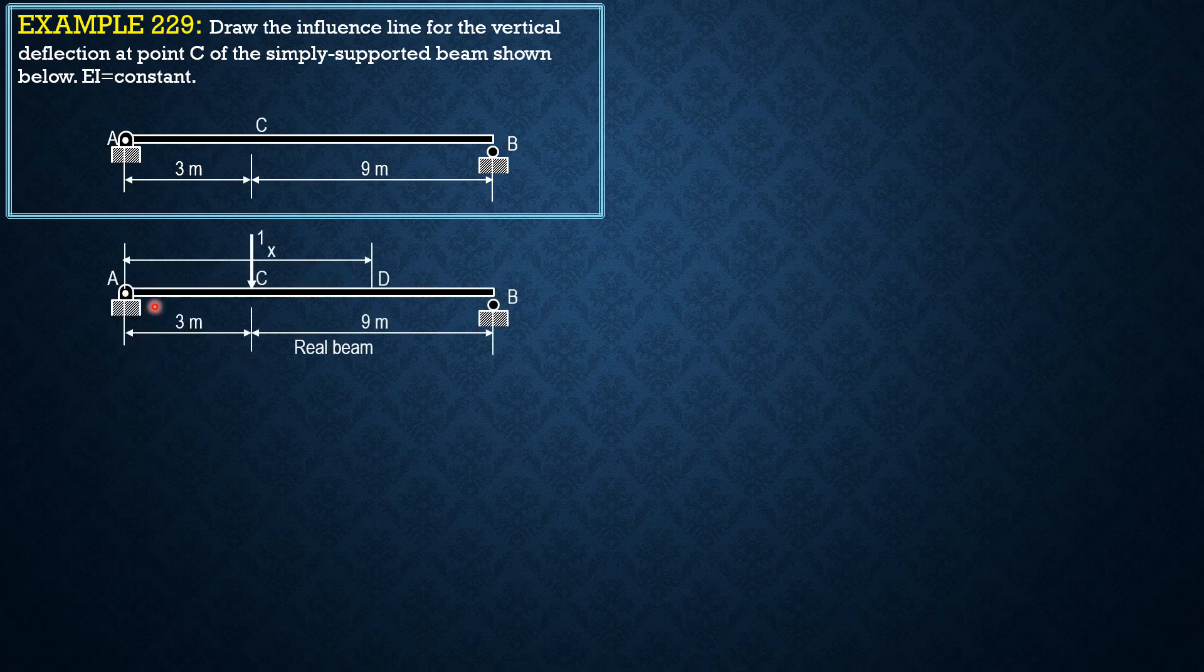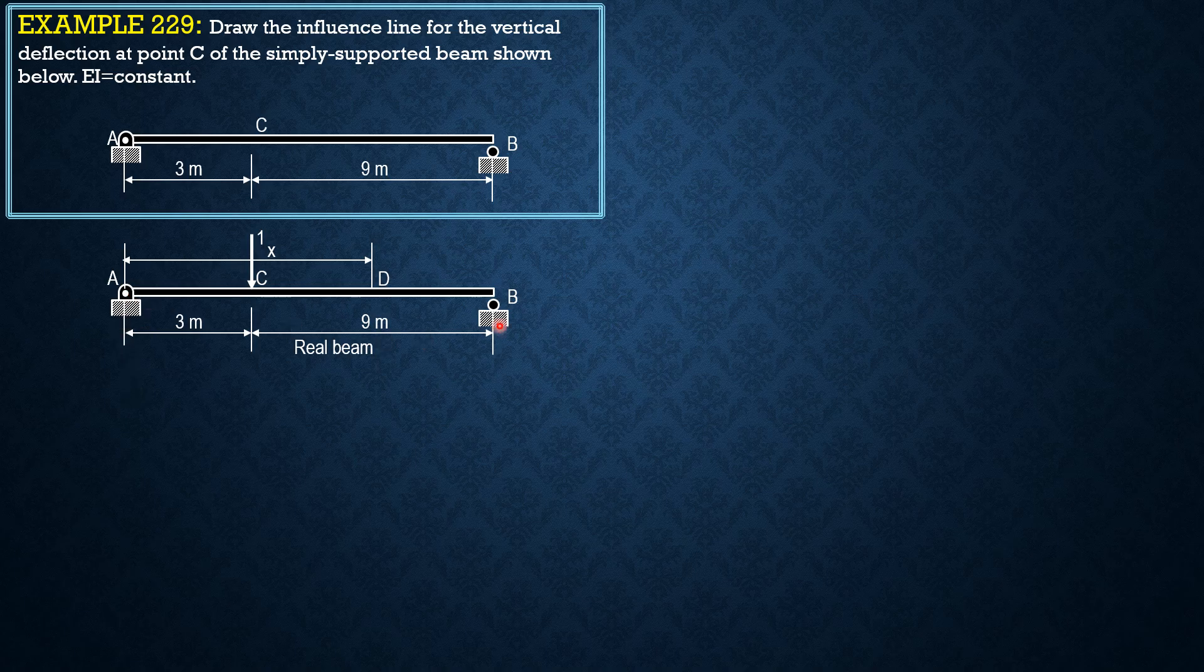The reaction here, AX is 0. So AY times 12 equals 1 times 9, so AY is 3 fourths or 0.75. Then selecting this as our section.